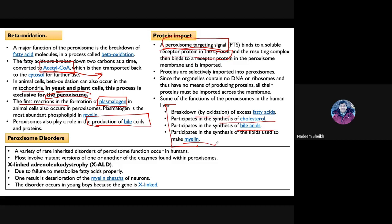Similar to lysosomal diseases, mutations in peroxisome-related genes cause disorders. For example, X-linked adrenal leukodystrophy is a disease of the nervous system in which the myelin sheaths of neurons are defective. This occurs because of failure in fatty acid metabolism, which ultimately affects the myelin sheath — particularly related to plasmalogen synthesis — and this disease commonly affects young boys.